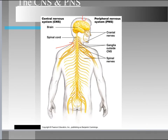The brain is part of the central nervous system and serves several different roles, all involving voluntary muscle activities. It interprets sensory impulses and controls higher mental functions such as memory, reasoning, intelligence, learning, judgment, and emotion. Those are just some of the basic things the brain does.